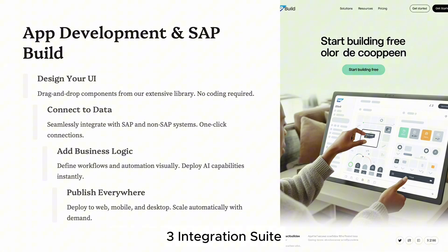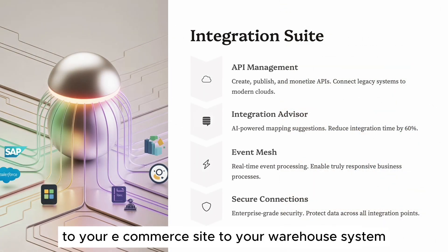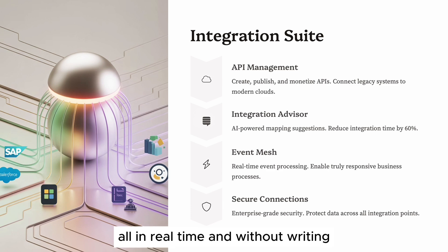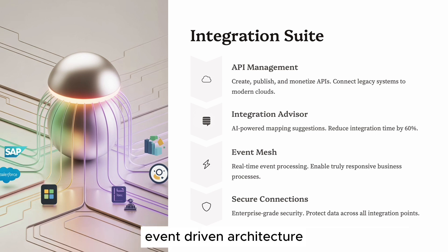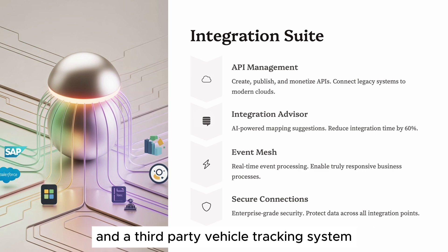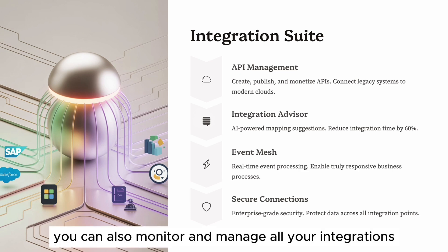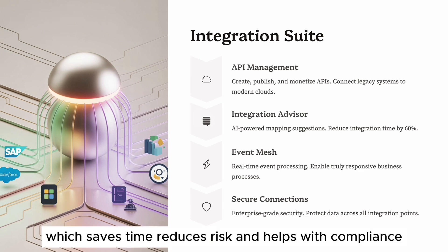Pillar 3: Integration Suite. This is the backbone of BTP — the SAP Integration Suite. Imagine your SAP ERP talking to your CRM, to your e-commerce site, to your warehouse system, all in real-time and without writing hundreds of lines of middleware code. Integration Suite includes pre-built connectors to popular SAP and non-SAP systems, event-driven architecture, API management tools, and mapping and transformation utilities. For example, a logistics company using SAP TM and a third-party vehicle tracking system can use Integration Suite to get real-time location data directly into SAP. You can also monitor and manage all your integrations from one unified dashboard, which saves time, reduces risk, and helps with compliance.